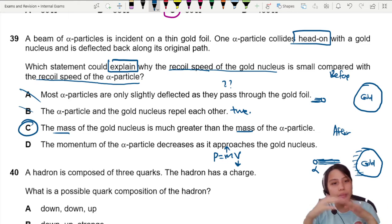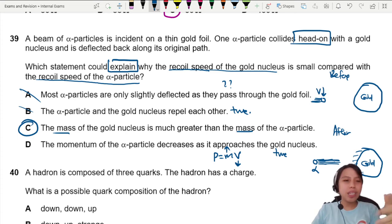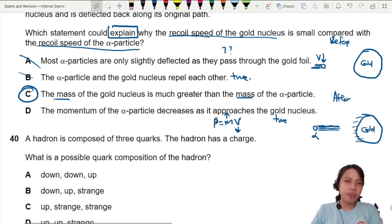But let's check D just in case. D says the momentum of the alpha particle decreases as it approaches the nucleus. True, but doesn't really explain recoil speed. I mean, it moves slower and slower because of repulsion. So this velocity actually is decreasing. So a lot of these statements are true, but it doesn't really answer the question.